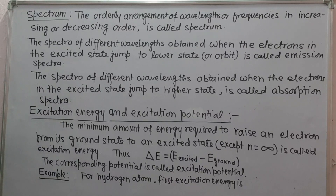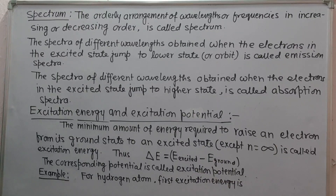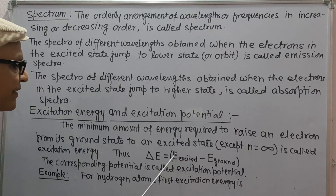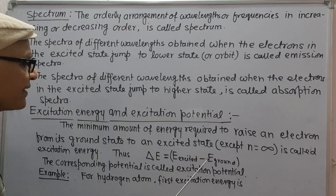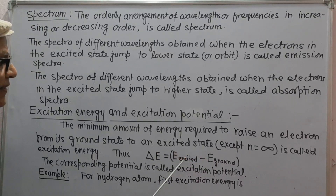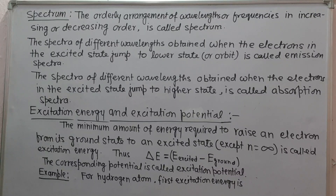Next, excitation energy and excitation potential. The minimum amount of energy required to raise an electron from its ground state to an excited state (except n = ∞) is called excitation energy. Thus, excitation energy equals the energy difference between the excited orbit energy and the ground orbit energy: ΔE = E_excited − E_ground. The corresponding potential is called excitation potential.